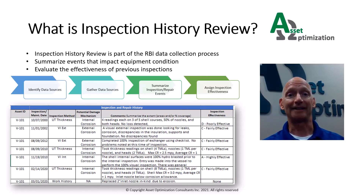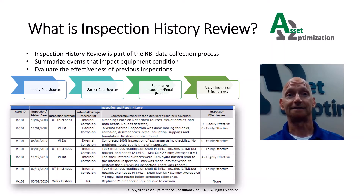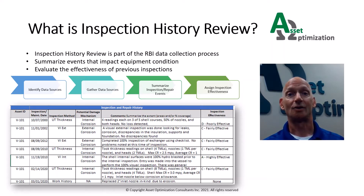Number two, gather your data sources. This will help make them readily available for the person reviewing the information. Three, summarize inspection repair events. This is typically done in a spreadsheet and includes the following information: the inspection or repair date, the inspection method, the extent, percent, or areas of equipment covered by the inspection or repair.